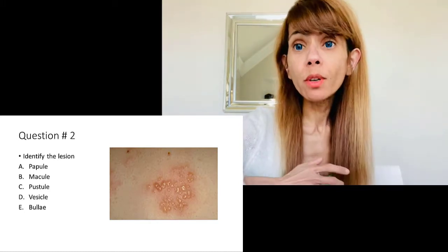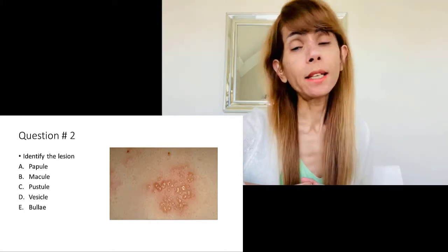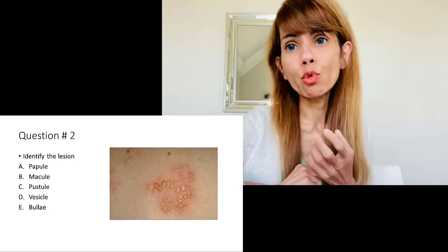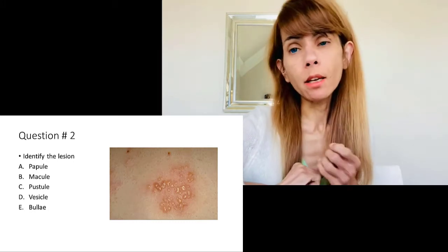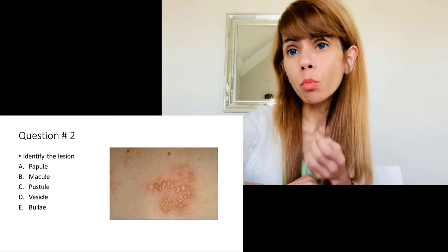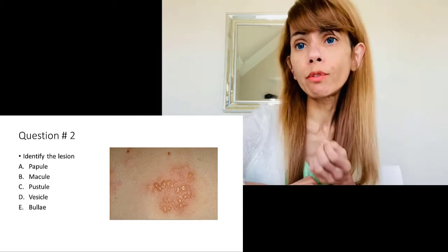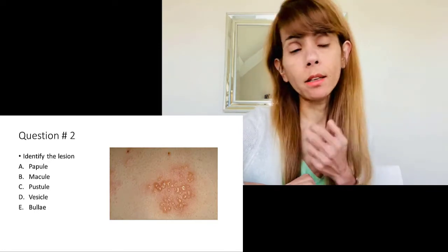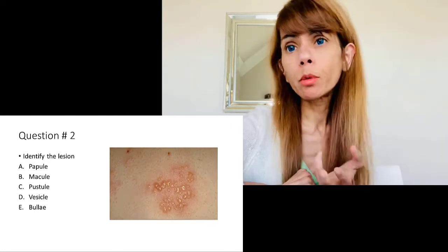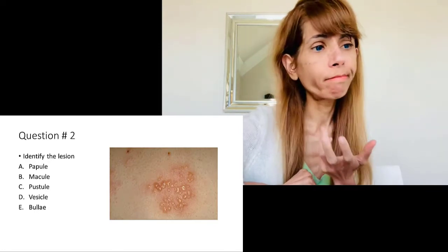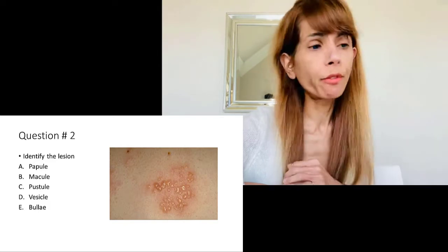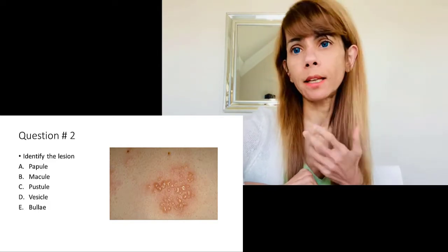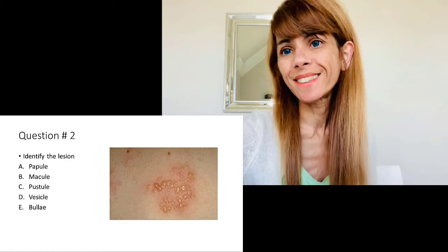Question number two is identifying this particular lesion. The correct answer is vesicle because it is small, fluid-filled with clear fluid. It is not a papule because it's filled with fluid. It's not a macule — it's not flat. So you already know the answer.